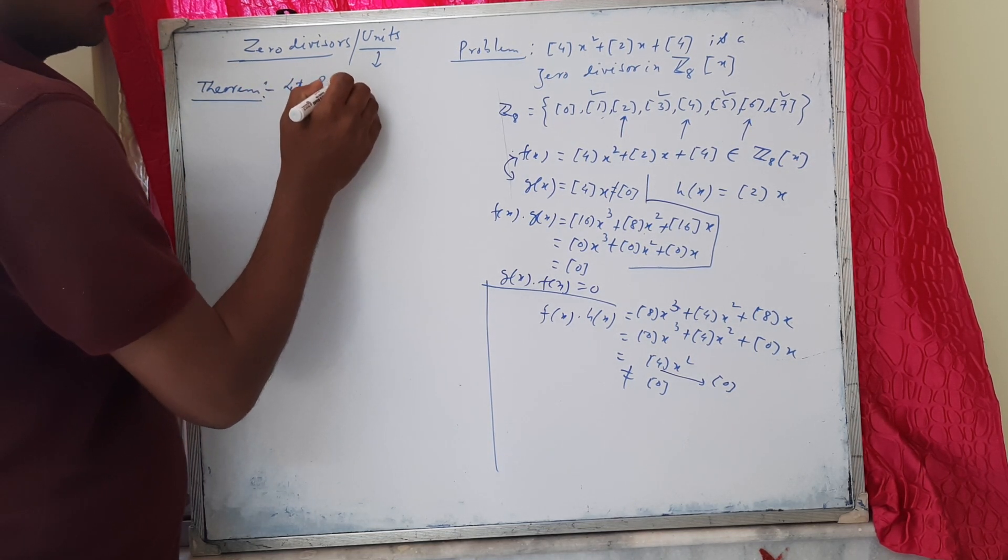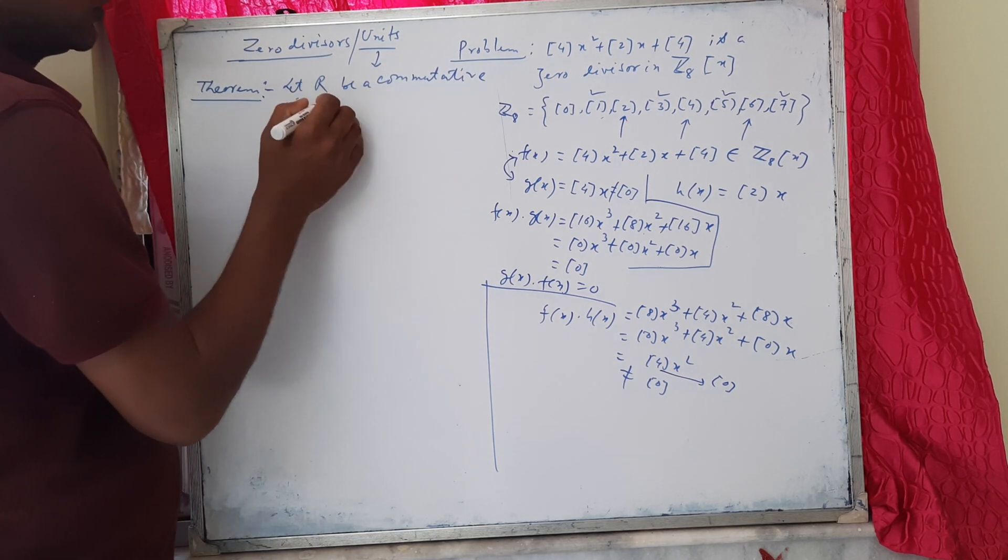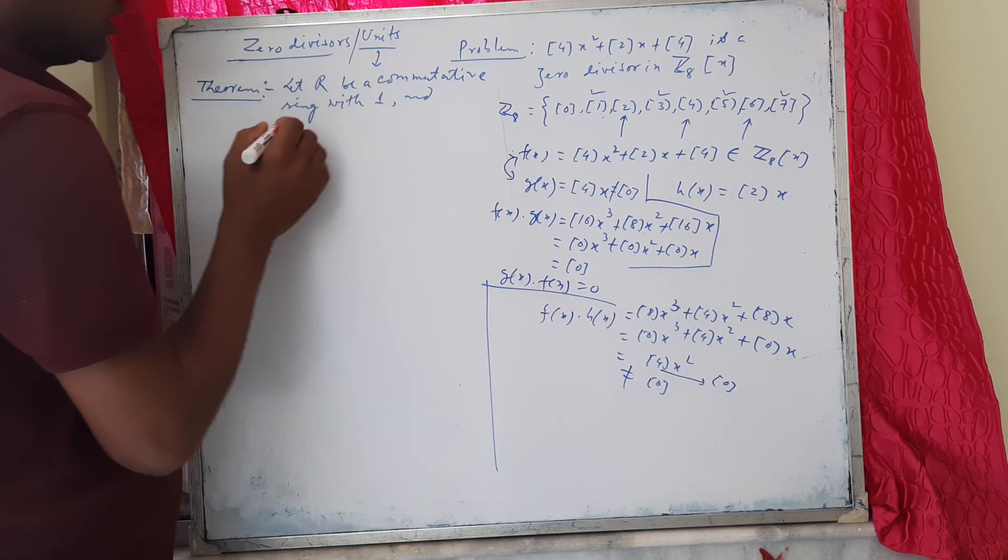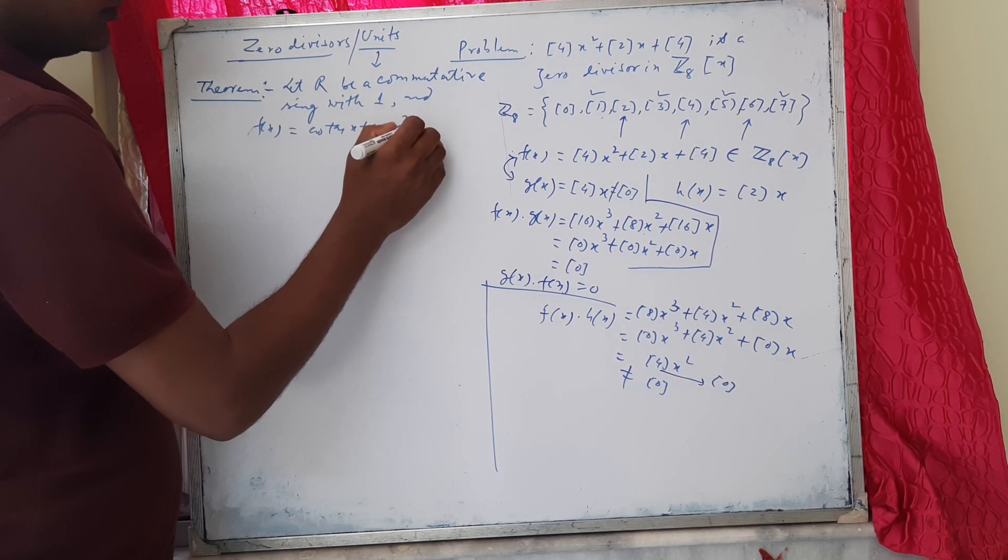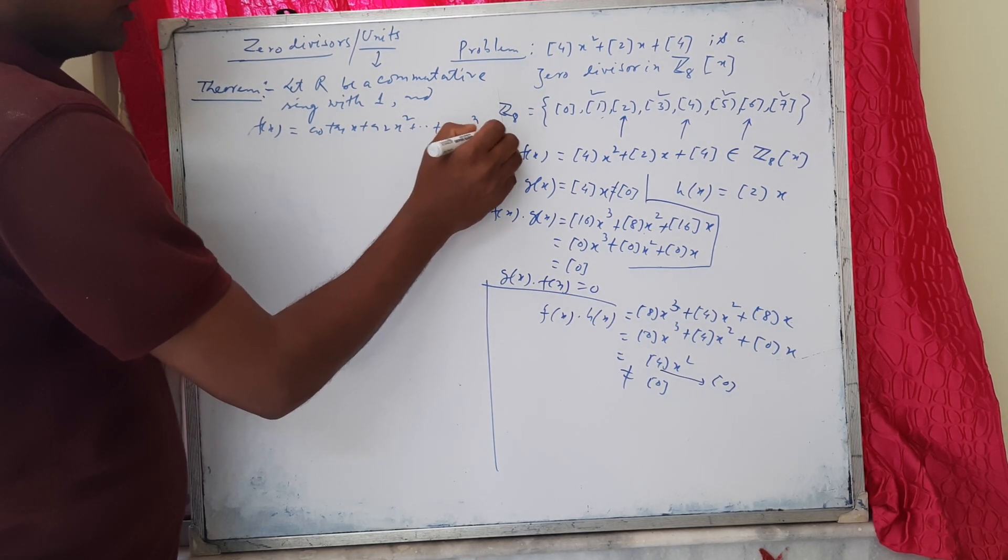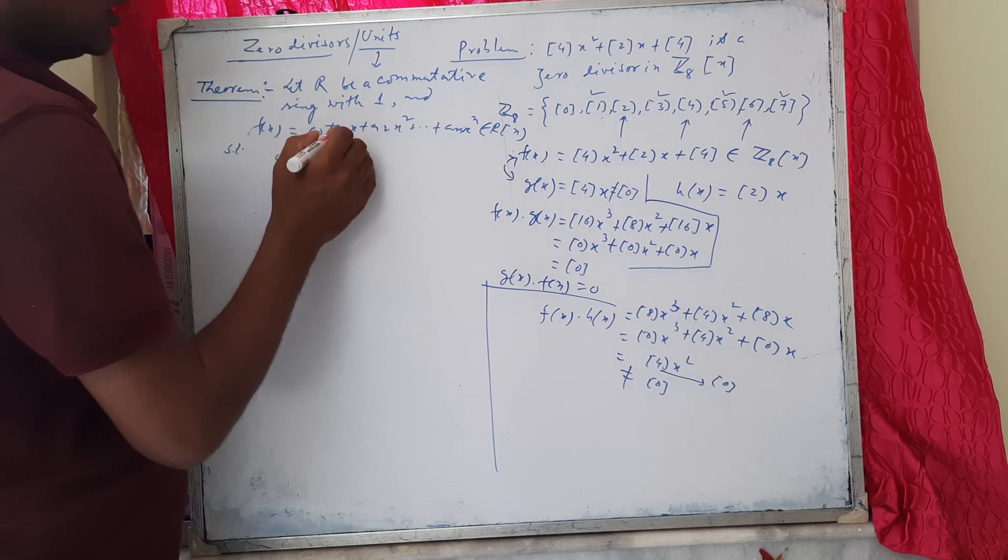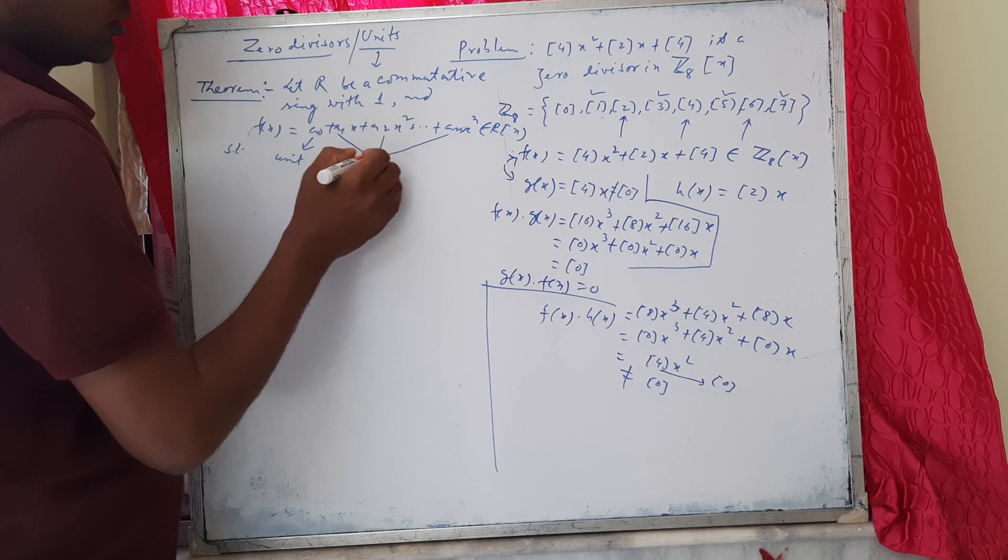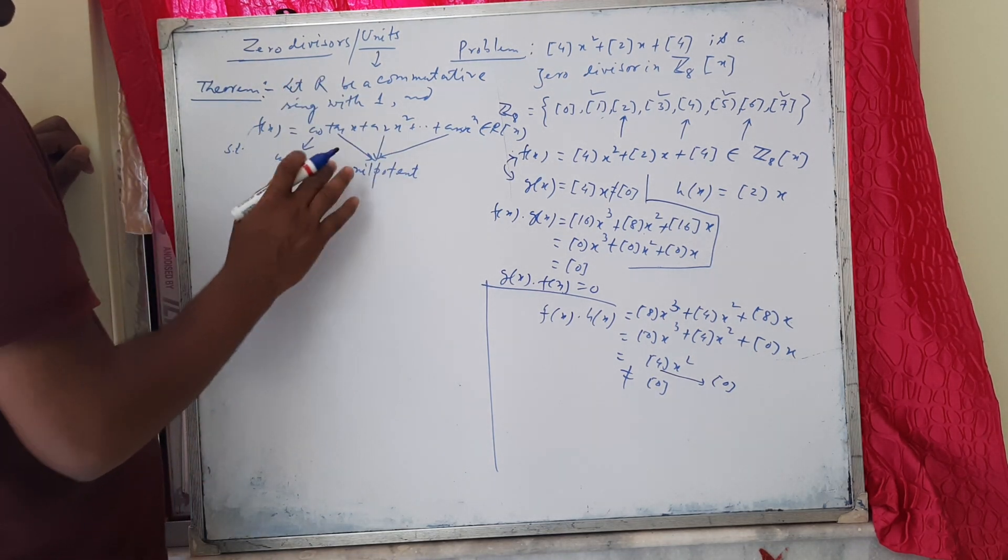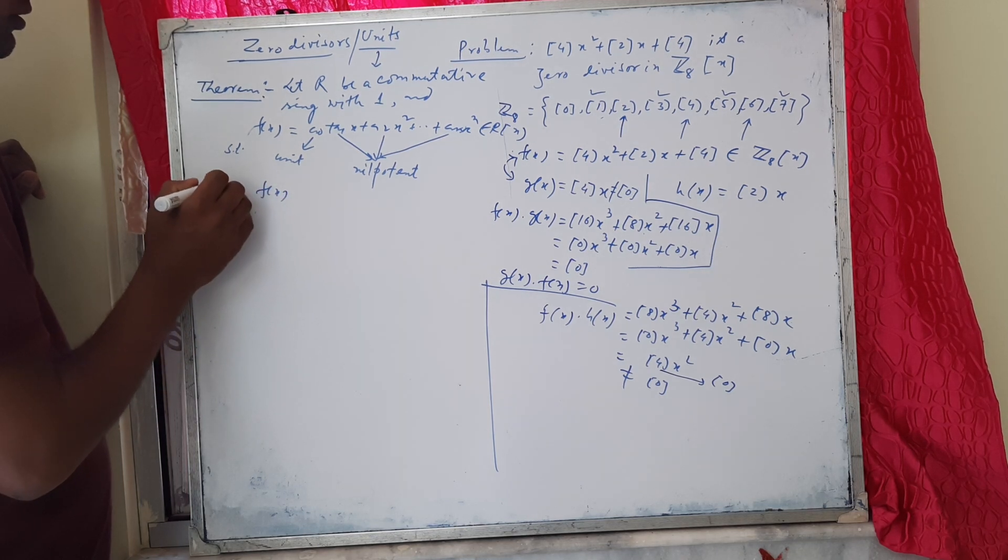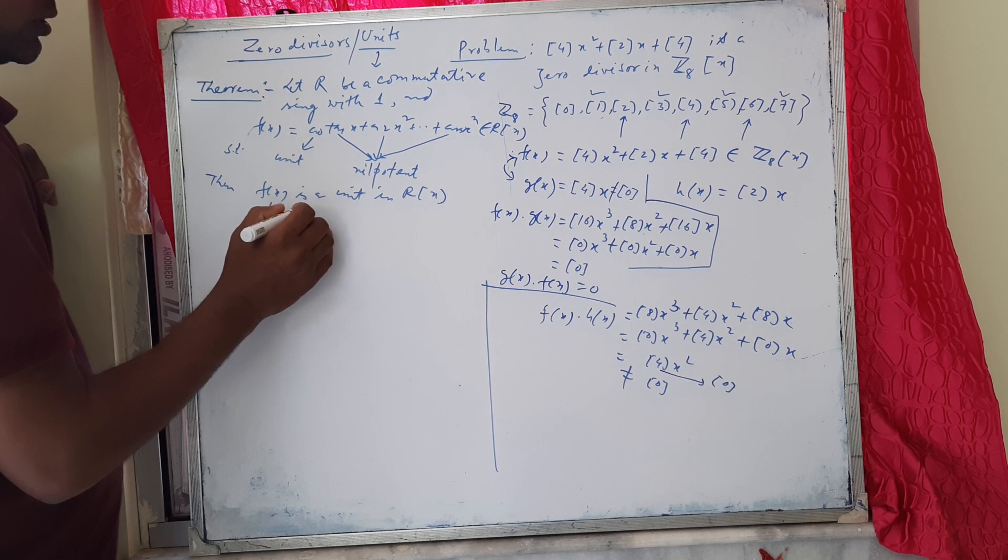Let R be a commutative ring with unity 1, and f(x) = a₀ + a₁x + a₂x² + ... + aₙxⁿ belongs to R[x] such that a₀ is a unit and a₁, a₂, ..., aₙ are all nilpotent elements in R. Then the conclusion is that f(x) is a unit in R[x], or f(x) is invertible.